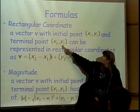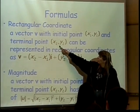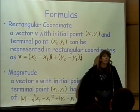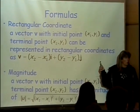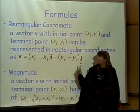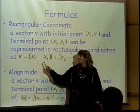So, if we started x1, y1 and our terminal point is x2, y2, then we can always rewrite our vectors in our rectangular coordinates by taking the end point minus the beginning point for x and putting that in front of the i.